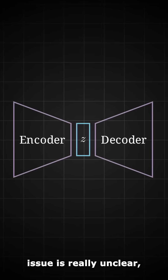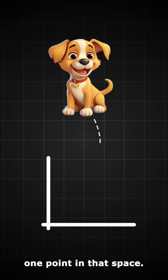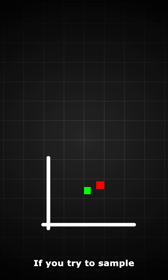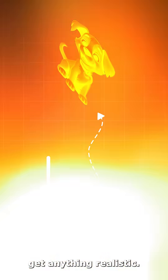The issue is regular autoencoders map each image to exactly one point in that space. If you try to sample new points, you usually won't get anything realistic.